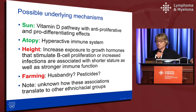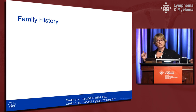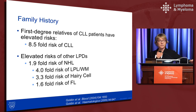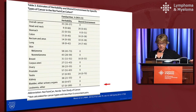Family history is a consistently established risk factor for CLL. A large study by colleague Glenn Golden in 2004 used the Swedish population registry, merging the family registry with the cancer registry, and found that first-degree relatives of CLL patients have an eight-and-a-half-fold increased risk — one of the strongest familial risks among many cancers. First-degree relatives also have a two-fold elevated risk of other non-Hodgkin's lymphoma. A twin study of 20,000 twins confirmed the familial risk and showed it is mostly due to inherited variants rather than shared environment.